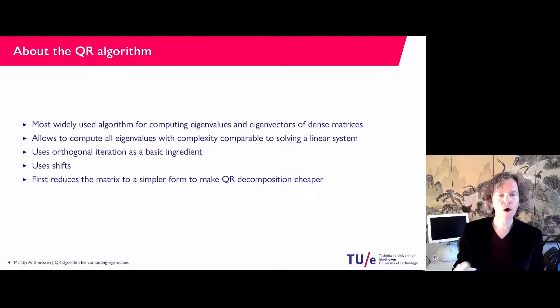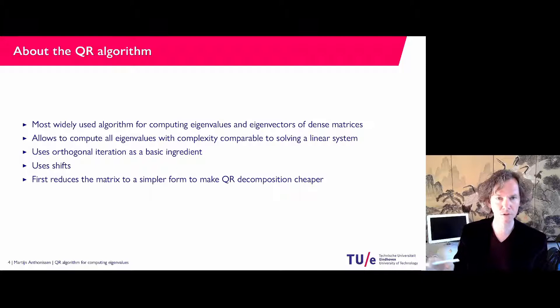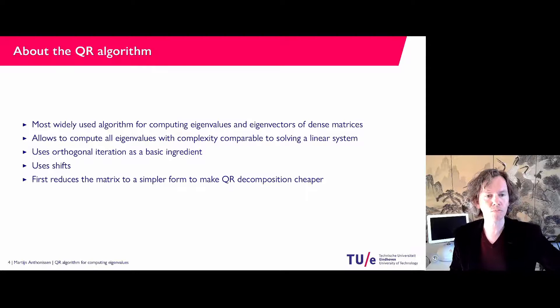The QR algorithm is the most widely used algorithm for computing the eigenvalues and eigenvectors of dense matrices. Dense means that most of the entries in your matrix are non-zero. If you have a matrix with many zeros it is called a sparse matrix and you use different methods, but for a dense matrix QR is the default choice. It allows computing all eigenvalues with complexity comparable to solving a linear system — something like n³ when your matrix is n×n.